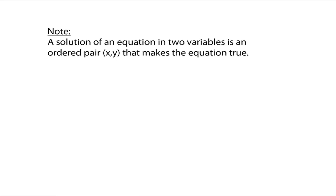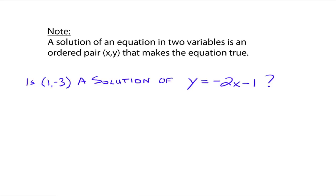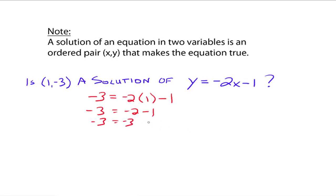When you plug in the x value for x and the y value for y, you get a true statement. For example, is (1, -3) a solution of y equals negative 2x minus 1? We know x is 1 and y is -3, so we substitute: negative 3 equals negative 2 times 1 minus 1. That gives negative 3 equals negative 3. That's true, so yes, (1, -3) is a solution.